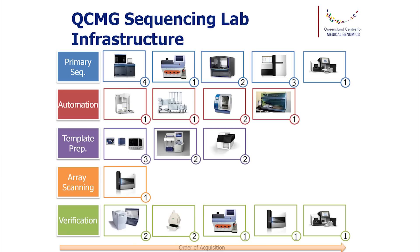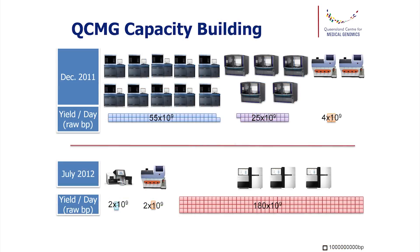Everything that we do in the sequencing lab, including our template prep and sample collection, is all managed through our LIMS system, which is a combination of the Genealogix Illumina package and a custom configuration for the other technologies. This really allows us to track everything we're doing, including the capacity and machine utilization.